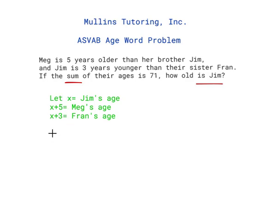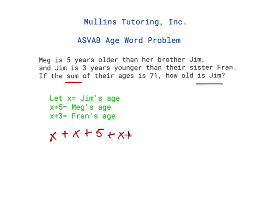So we're going to write out the problem: x plus x plus 5, plus x plus 3, and that's going to equal 71.